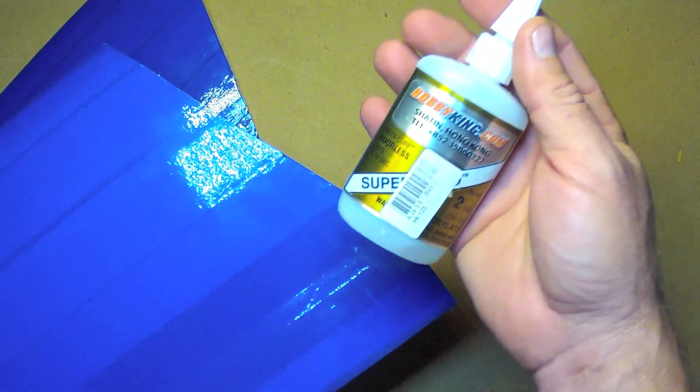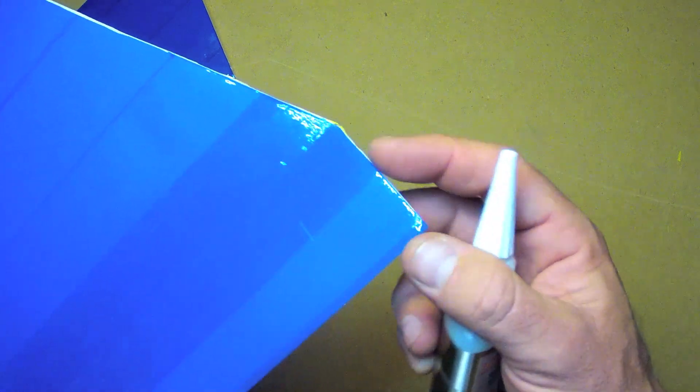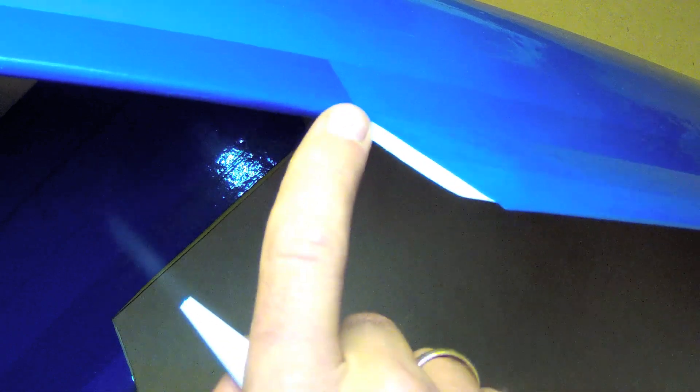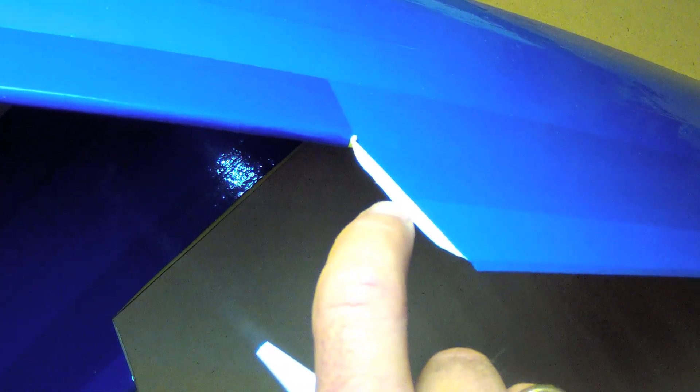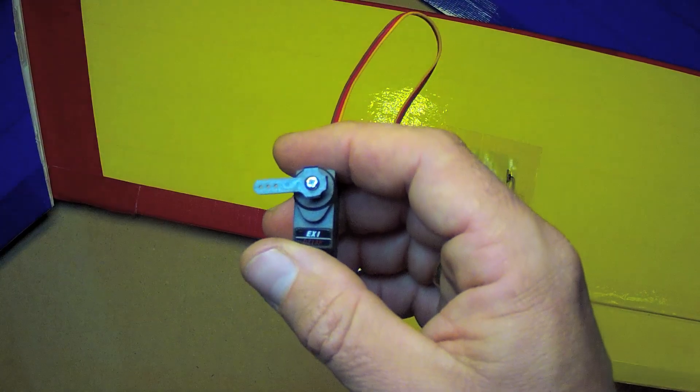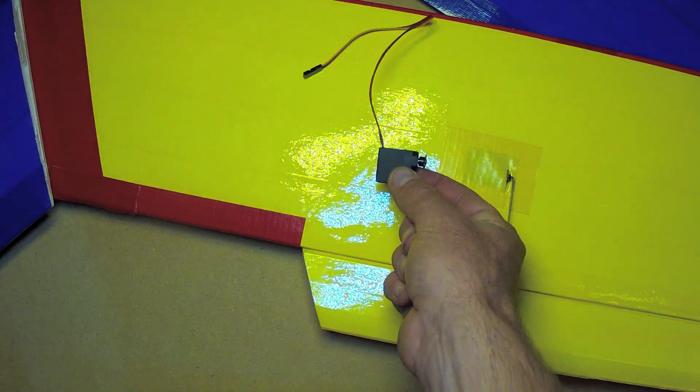And then I recommend using Foam Safe CA glue along these exposed foam edges here, and here really toughens it up and prevents it from getting water seepage under there, separation of the tape and paper, and just generally makes it more durable. The next step will be to install the servos in the wing.